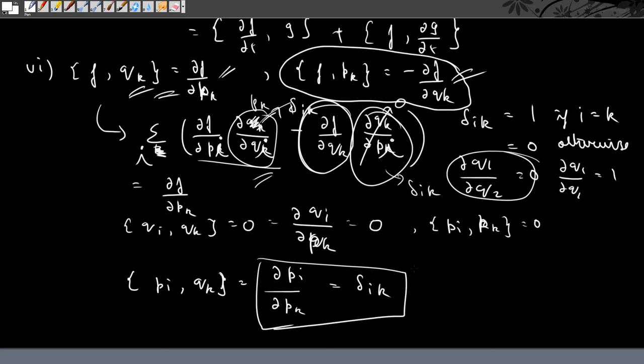This particular expression δ_ik is called the Dirac delta function. So that's it for this video. In the next video we will see some more important properties of the Poisson bracket. See you next time.